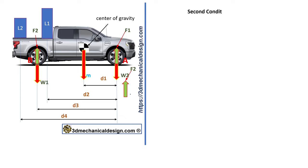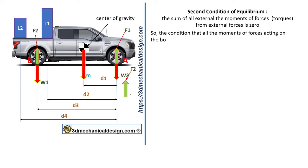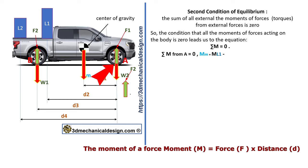Second condition of equilibrium: The sum of all external moments of forces (torques) from external forces is zero. So, the condition that all moments of forces acting on the body is zero leads us to the equation. Sum of moments from A equals zero: MM plus ML1 minus MF2 plus ML2 equals zero. MF2 equals MM plus ML1 plus ML2.